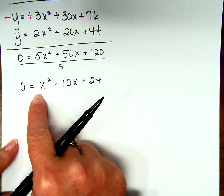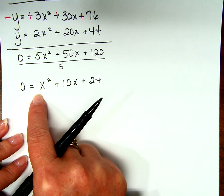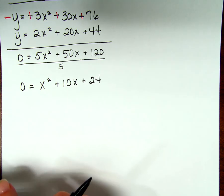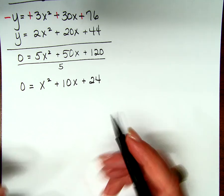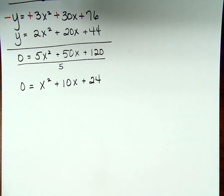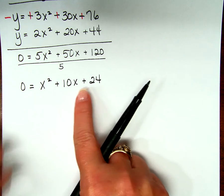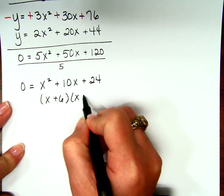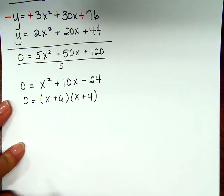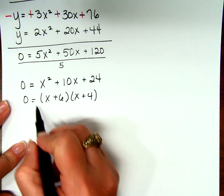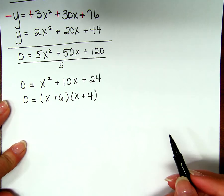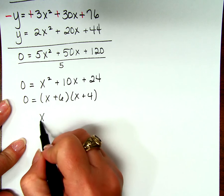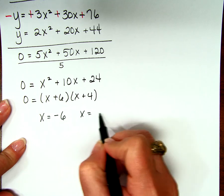Could I do square roots here? Not with an x squared and an x. So that leaves factoring or quadratic formula. Why jump so quickly to factoring? Don't you know what multiplies to be 24 and adds to be 10? That's 6 and 4. So the step we skipped: x plus 6 equals 0, x plus 4 equals 0 — giving us x equals negative 6 and x equals negative 4.